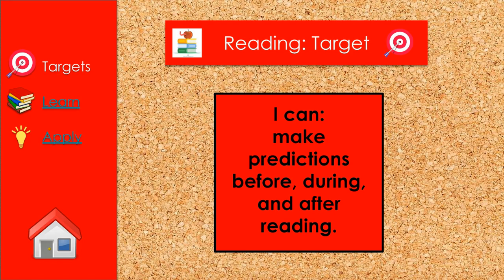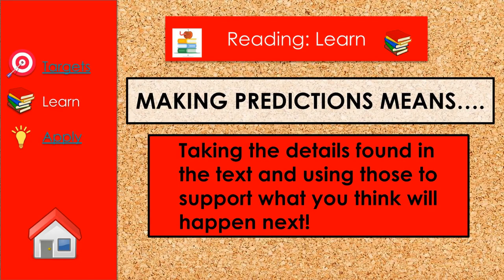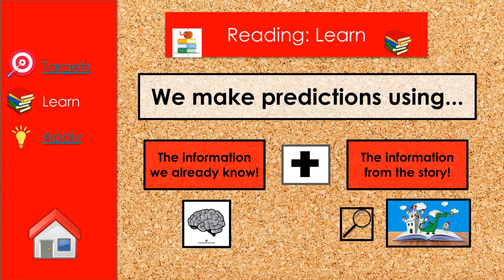The reading target is: I can make predictions before, during, and after reading. Making predictions means taking the details found in the text and using those to support what you think will happen next. We make predictions using the information we already know and the information from the story.